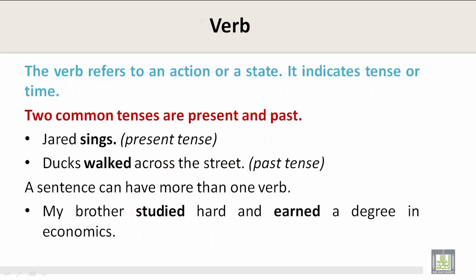Verb. The verb refers to an action or a state. It indicates tense or time. Two common tenses are present and past. Jared sings — this is the present tense; currently, Jared sings. Ducks walked across the street — this is the past tense. This refers to something that happened in the past, not in the present. A sentence can have more than one verb.